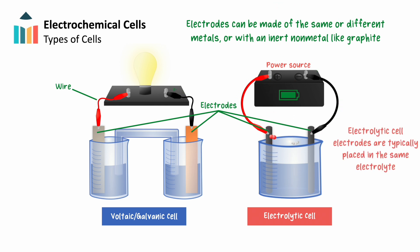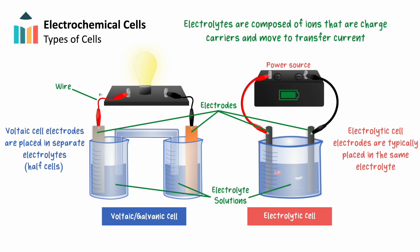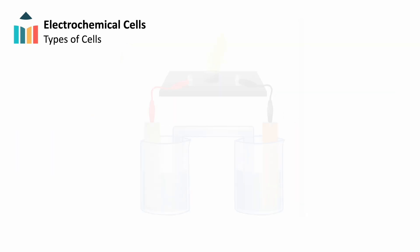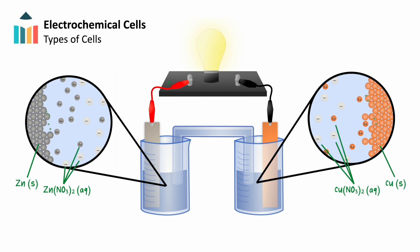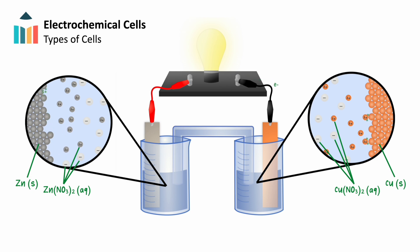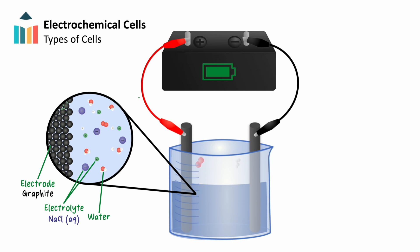Whereas in a voltaic cell, the two electrodes are immersed in separate electrolytes — we call these half-cells. In both types of electrochemical cells, the electrolytes are composed of ions that act as charge carriers. The ions need to be free-moving to transfer current. In voltaic cells, these ions are dissolved in solution, such as zinc or copper salts in the zinc-copper voltaic cell. In electrolytic cells, ions are either dissolved in solution or are in the molten phase.